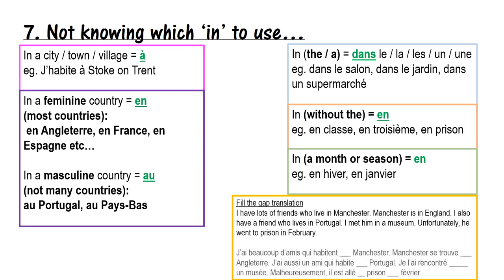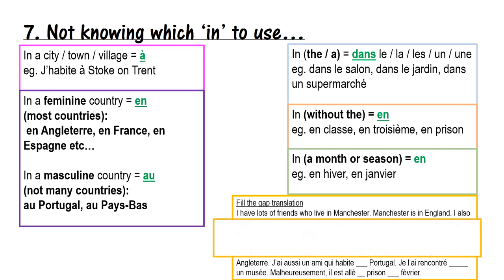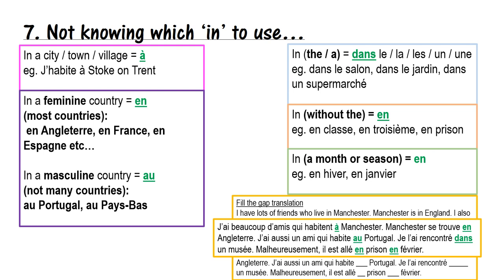Please complete this translation by filling the gaps. The answers: 'J'ai beaucoup d'amis qui habitent à Manchester' — à because Manchester is a city. 'Manchester se trouve en Angleterre' — en because Angleterre is a feminine country. 'J'ai aussi un ami qui habite au Portugal' — au because Portugal is a masculine country. 'Je l'ai rencontré dans un musée' — dans un because we're saying 'in a.' 'Il est allé en prison en février' — en prison because we say 'in prison' without 'the,' and en février because February is a month.